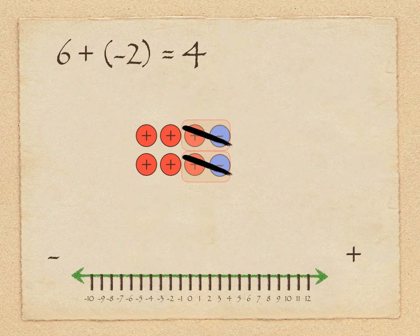We can show that on a number line. Here's our caveman starting at position 6, looking in that direction because he's adding and his inclination is to go higher. But this time he's actually being told he's got to add a negative number. So although he's looking in that direction, because he's adding a negative, he's going to shuffle back two steps to positive 4. So we're decreasing the value.